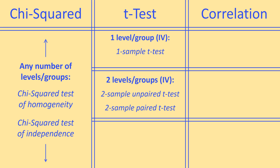The paired t-test doesn't have to involve the same group — the pairing might involve mothers and daughters, or any two groups the experimenter specifically paired together. If you have more than two groups — three or more — you'll be using a one-way ANOVA test, which stands for analysis of variance. This test looks to see whether they are all similar. If any one group is different, you'll get a statistically significant result. However, the one-way ANOVA doesn't tell you which of the groups is statistically different, or if there are multiple that differ from each other — it only tells you whether they are all similar or at least one is different.